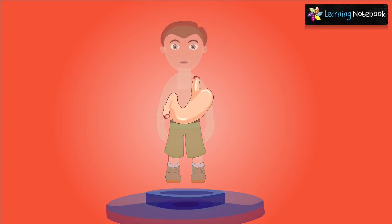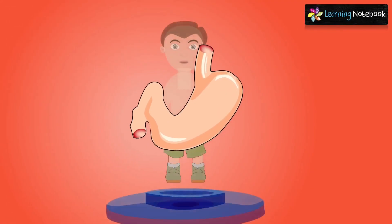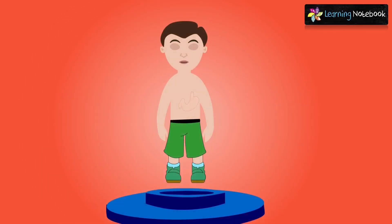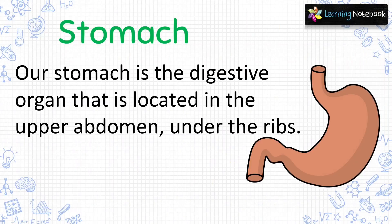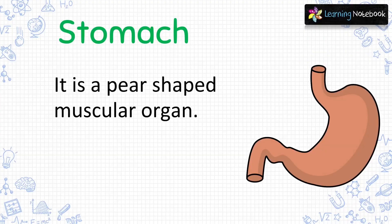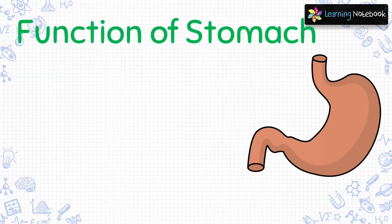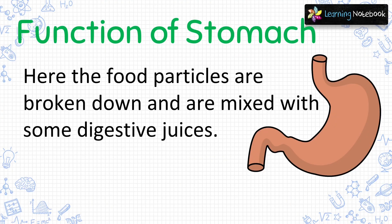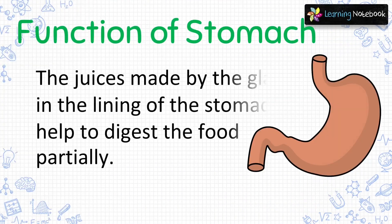The next internal organ is stomach. Our stomach is the digestive organ located in the upper abdomen under the ribs. Stomach is a pear-shaped muscular organ. The food particles are broken down and mixed with some digestive juices. The juices made by the glands in the lining of the stomach help to digest the food partially.